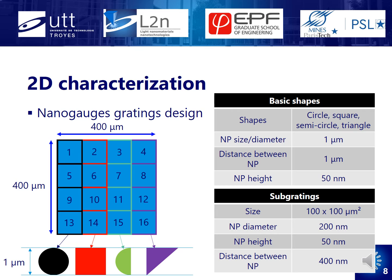The grating design made for this study is quite large for electron beam lithography, but it is essential to cover the tip of the notch to observe the crack initiation. The entire grating is 400 square micrometers, divided into 16 subgratings of 100 square micrometers each. Each subgrating is surrounded by 1 micrometer basic shapes, as you can see below in different colors. All dimensions are shown in the tables on the right. In every subgrating, the nanoparticles present a diameter of 200 nanometers, a height of 50 nanometers, and a periodic distance of 400 nanometers between nanoparticle centers. A number is assigned to each subgrating in order to follow the evolutions during the test.